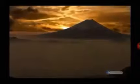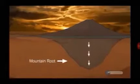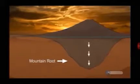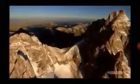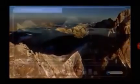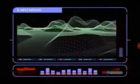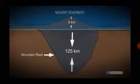Scientists noticed that the parts known as the mountain root sometimes extended down as far as 10 to 15 times their own height. For example, Mount Everest, the summit of which stands approximately nine kilometers above the surface of the Earth, has a root deeper than 125 kilometers.